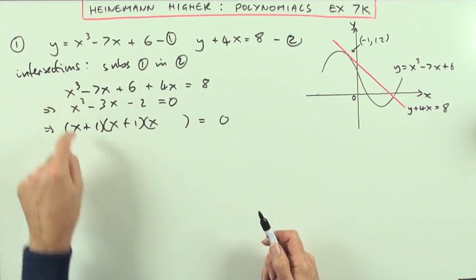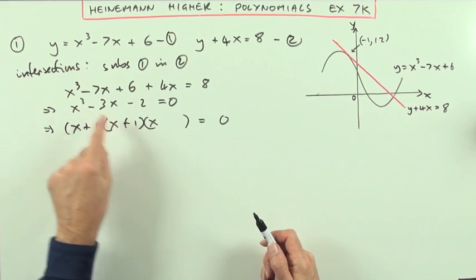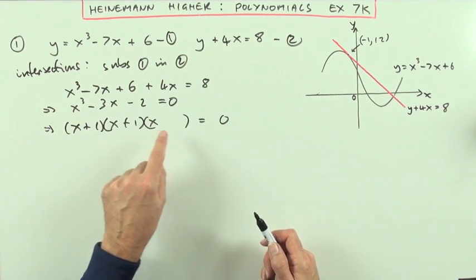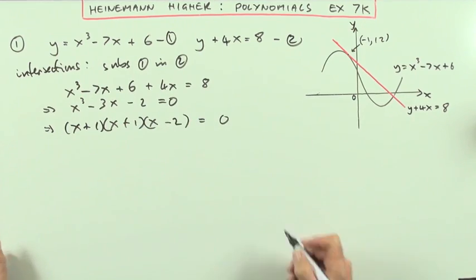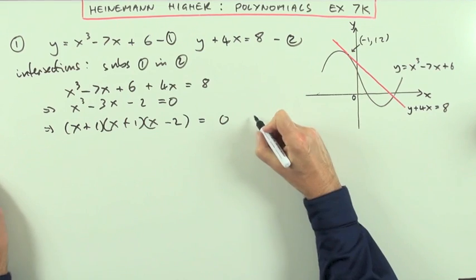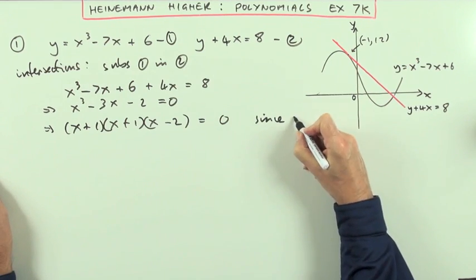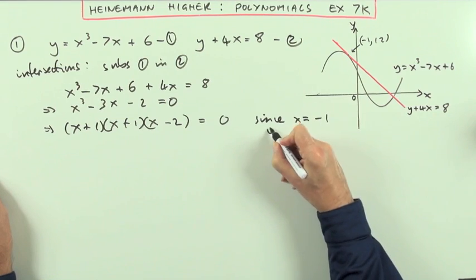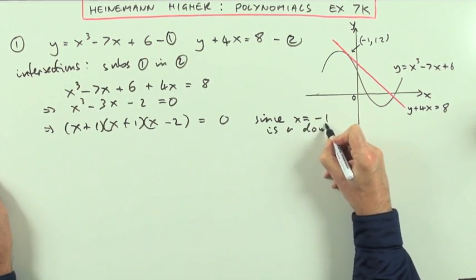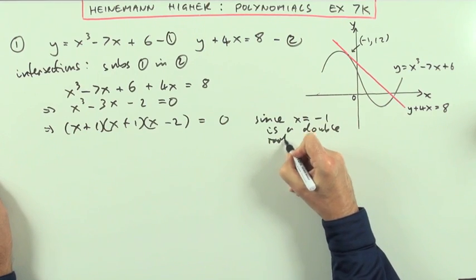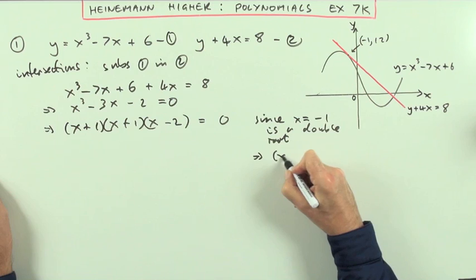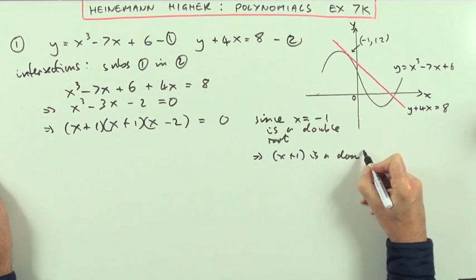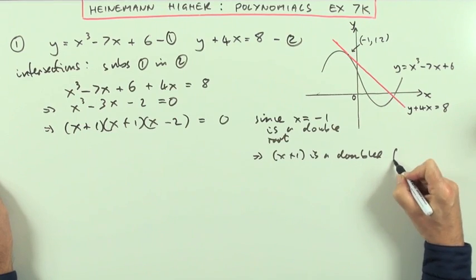So I should be able to equate the two parts. x times x times x makes x³. 1 times 1 times -2 makes -2. Maybe I should give a reason at the side. I could say since x = -1 is a double root, that means x + 1 is a double or repeated factor.